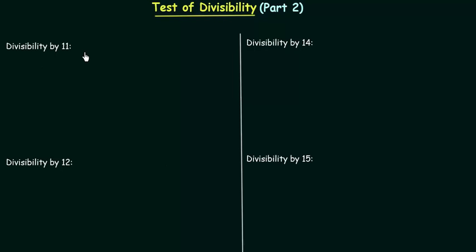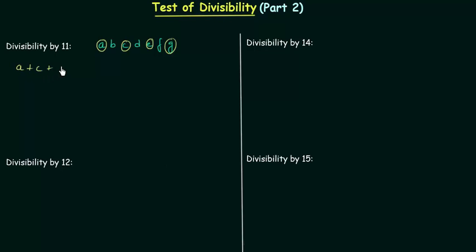The first thing we have to do is find out the sum of digits at odd places. Let's say the number is A, B, C, D, E, F, G. The digits at odd places are G, E, C, A and we have to find out their sum. So A plus C plus E plus G, and let's say this sum is equal to X.